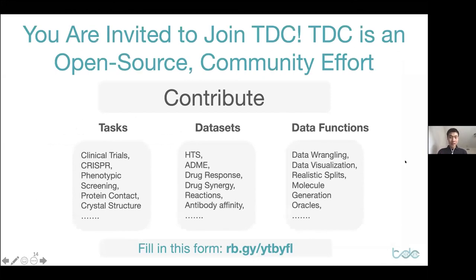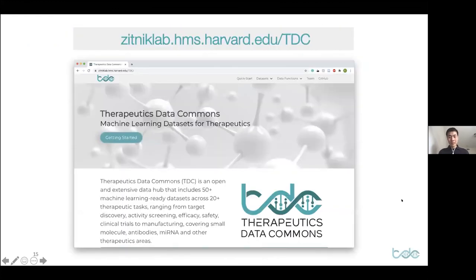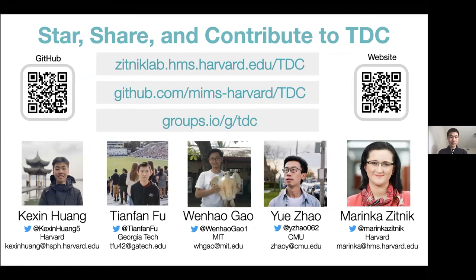That's the overview of TDC's initial release. TDC is an open-source and community-driven effort, and we are looking for contributions from domain scientists and machine learning researchers. Specifically, we're looking for new therapeutic tasks such as clinical trial, CRISPR, and phenotypic screening, new datasets for existing tasks such as high-throughput screening and ADMET, and more data functions to enrich our toolkit. If you're interested, please fill in our form and we will get back to you. We've also set up a website documenting all datasets and data functions — please check it out and explore TDC. Please star, share, and contribute. Here are the website link, GitHub link, and mailing list sign-up, along with contact information for all team members.